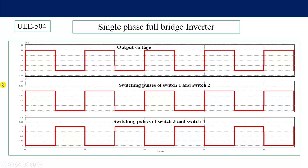In the single-phase half-bridge inverter, the output voltage was V/2 — half of the input voltage. But in the full-bridge inverter, the output voltage is V in the positive half-cycle and minus V in the negative half-cycle, compared to minus V/2 in the half-bridge. So the output voltage of the full-bridge inverter is double that of the half-bridge inverter.